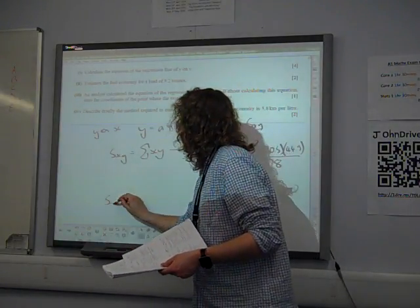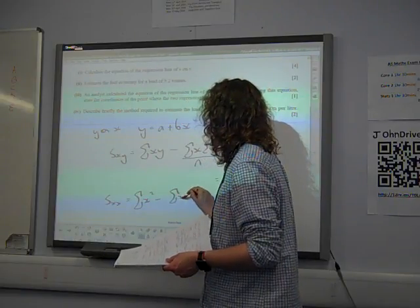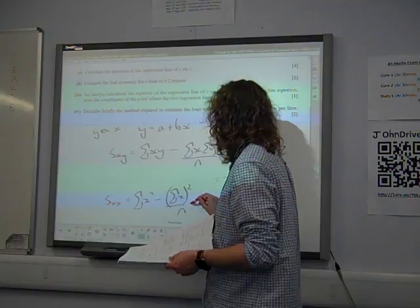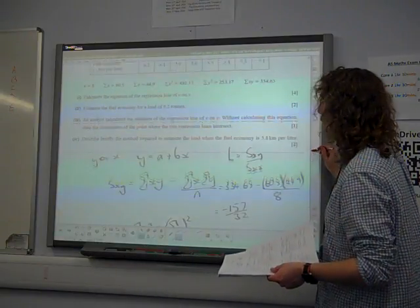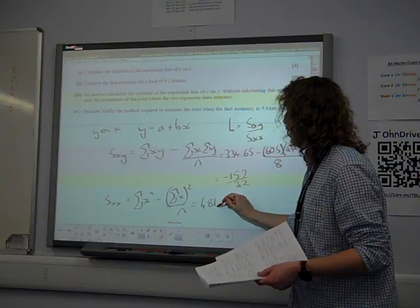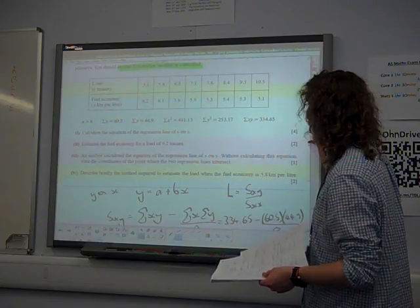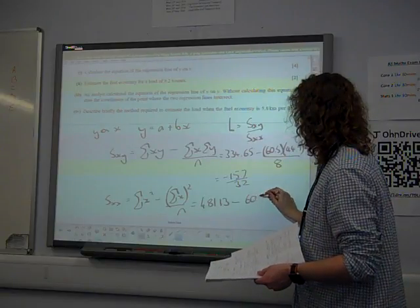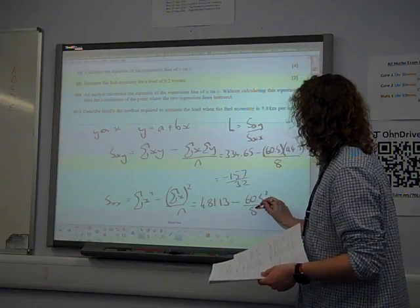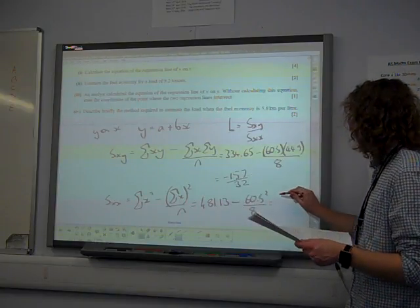Sxx in the formula booklet is written as sigma x squared minus sigma x when you square it over n. So we've been given that information as well, that is 481.13, take away 16.5 squared over 8, and that one does give us 18879 over 800.